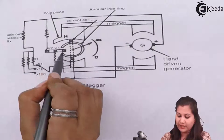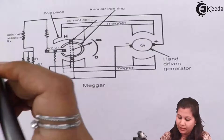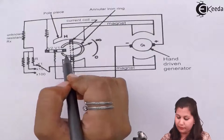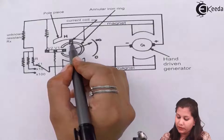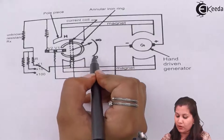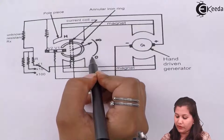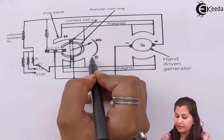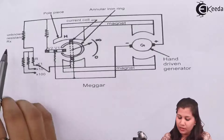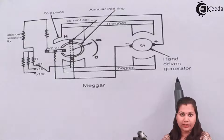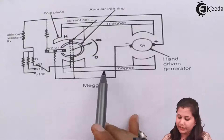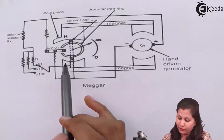The current coil is fixed whereas the potential coil is rotating. In between the two magnets we have this annular iron ring, and on the current coil a pointer is connected. This pointer moves over a calibrated scale and the divisions on the scale are from zero to infinity. We have a hand-driven generator which provides the voltage and current, and this generator is connected to the voltage coils.